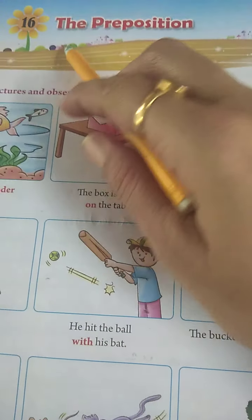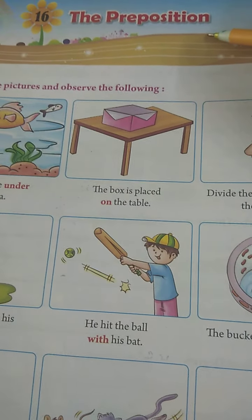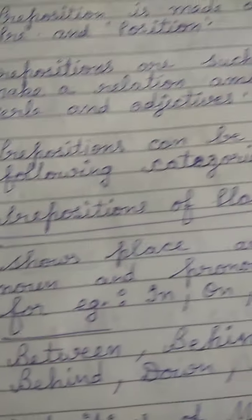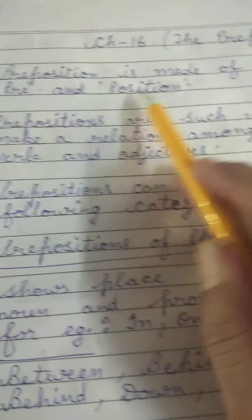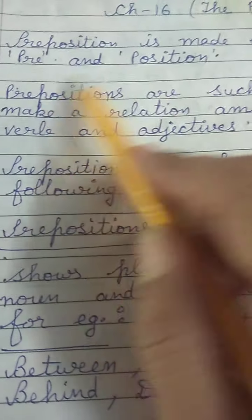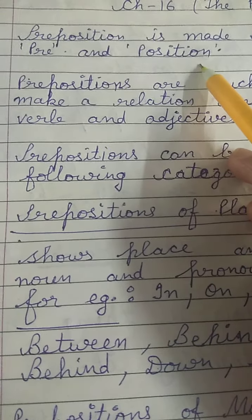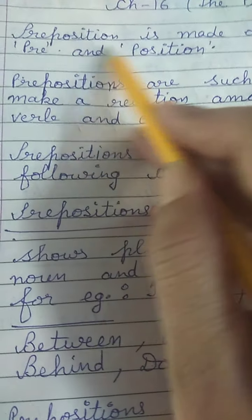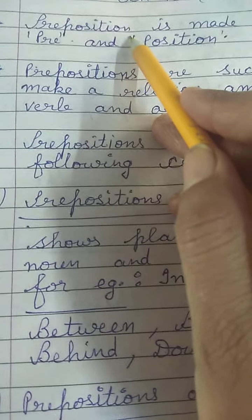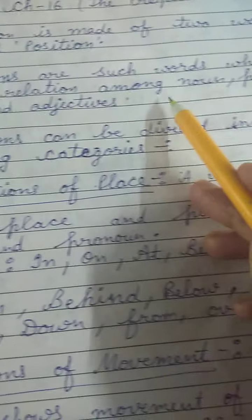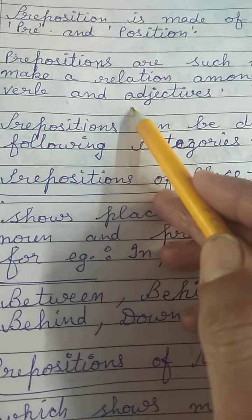Let's start chapter number 16, the preposition. Firstly, what is the definition of preposition? Preposition is made of two words: pre plus position. Pre plus position means it tells the position of a noun or pronoun. So, prepositions are such words which make a relation among noun, pronoun and adjectives.